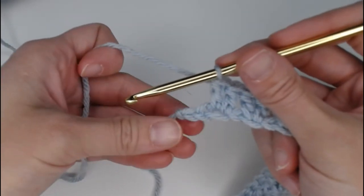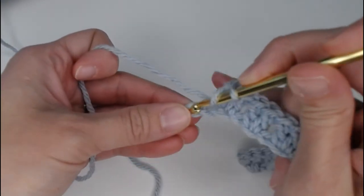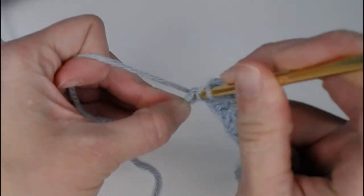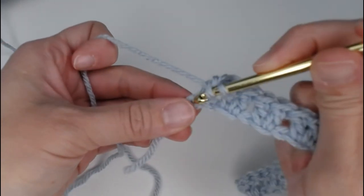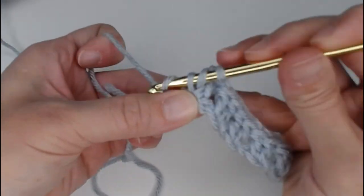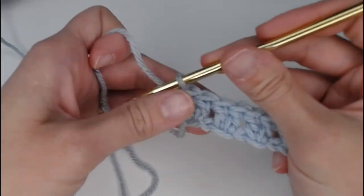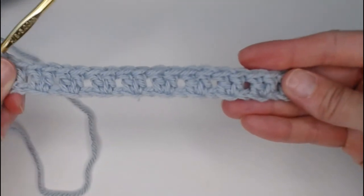Alright, skip 1, last chain. We are putting 2 double crochets. 1, 2, great. Okay, we are done with row 1.